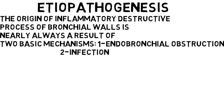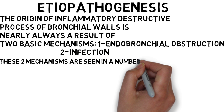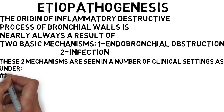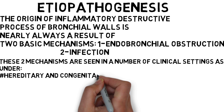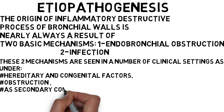Infection may be secondary to local obstruction and impaired systemic defense mechanisms promoting bacterial growth, or infection may be the primary event — i.e. bronchiectasis developed in suppurative necrotizing pneumonia. These two mechanisms are seen in a number of clinical settings: hereditary and congenital factors, and obstruction as a secondary complication.